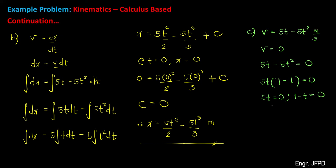Solving for t in 5t equals 0 gives t equals 0 over 5, which is 0 seconds. For the second equation, 1 minus t equals 0 — transposing the negative t to the right side gives t equals 1 second. Therefore, the times when the velocity becomes equal to 0 are at t equals 0 seconds and t equals 1 second.